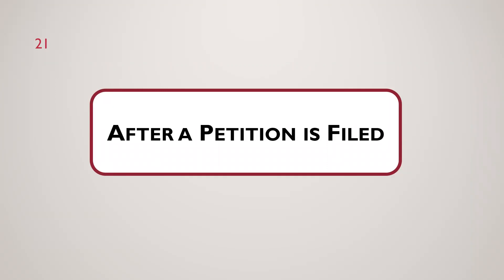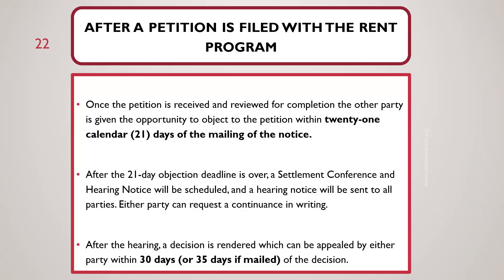After a petition is filed, once the petition is received by the rent program and reviewed for completion, the other party is given the opportunity to object within 21 calendar days of the mailing of the notice. After the 21-day objection deadline is over, a settlement conference and hearing notice will be scheduled and sent to all parties. Either party can request a continuance in writing. After the hearing, a decision is rendered, and that decision can be appealed by either party within 30 days, or 35 days if mailed.